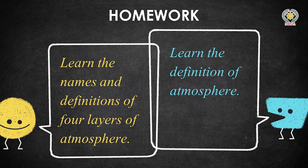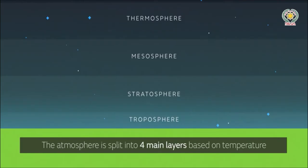The first layer is troposphere — three syllables: tro-po-sphere. The second layer is stratosphere — stra-to-sphere. The third layer is mesosphere — me-so-sphere. That is the unique cold layer. And the last is thermosphere — ther-mo-sphere. Remember: stratosphere and thermosphere are hot, but comparing the two, thermosphere is the hottest. Mesosphere is the cold layer sandwiched between them.